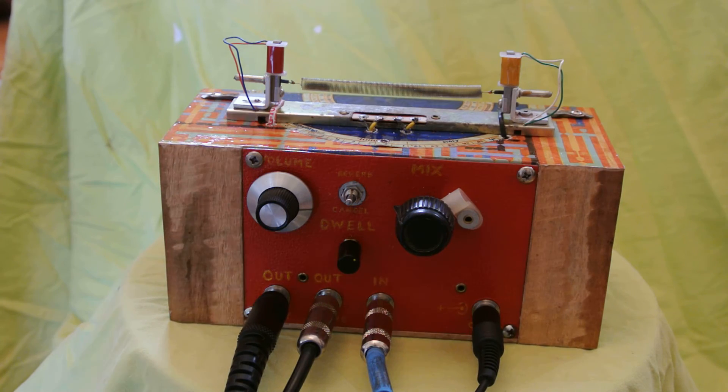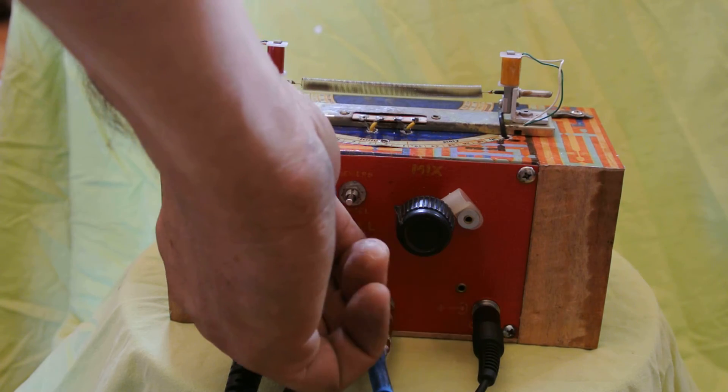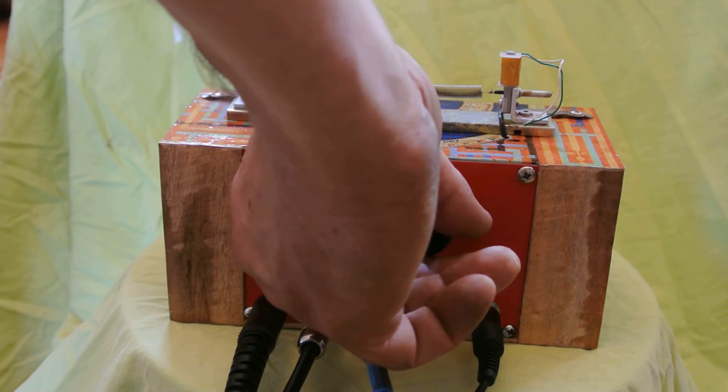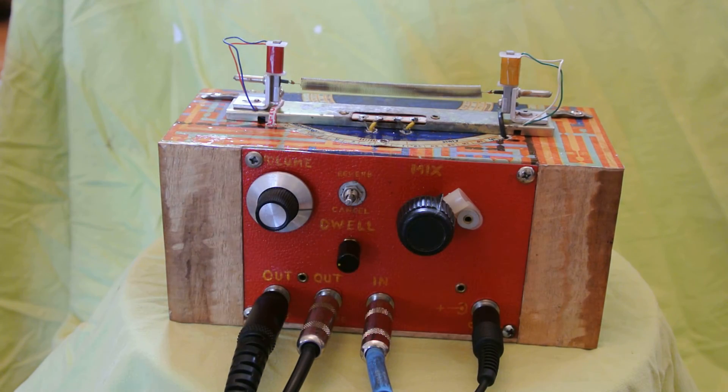So when the dwell is set high, it gets pretty unnatural, I guess we could say. Turn the dwell down low and maybe add a lot of the mix. And now I'm going to mix in the dry channel on the amp again.